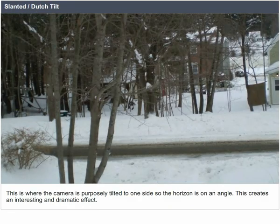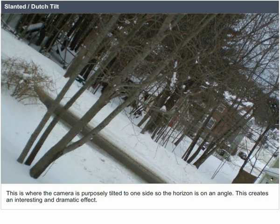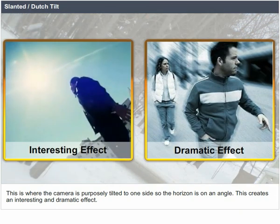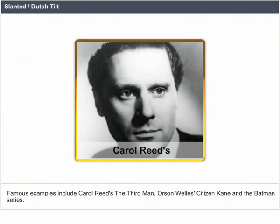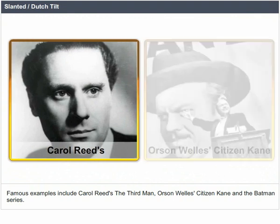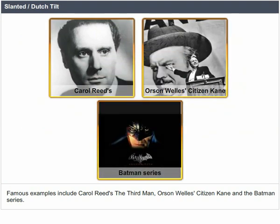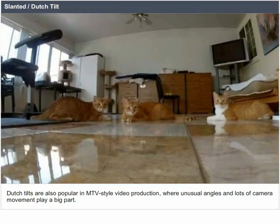Slanted or Dutch tilt. This is where the camera is purposely tilted to one side, so the horizon is at an angle. This creates an interesting and dramatic effect. Famous examples include Carol Reed's The Third Man, Orson Welles' Citizen Kane, and The Batman series. Dutch tilts are also popular in MTV-style video production, where unusual angles and lots of camera movement play a big part.